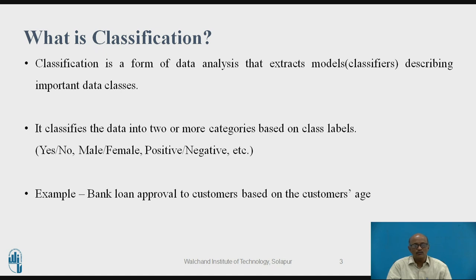For example, a bank loan is approved to customers based on the customer's age. If the customer's age is say more than 50, around 52, and he has applied for a loan, the loan officer will decide based on age whether he should be approved or not, or approved for a certain amount. Based on the remaining service, the loan can be approved.